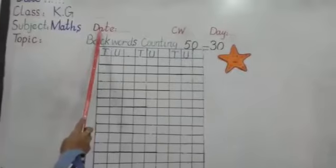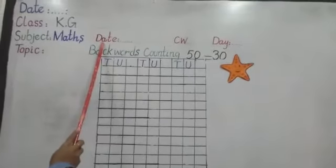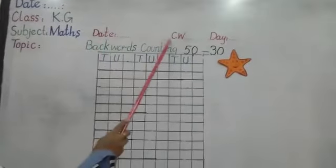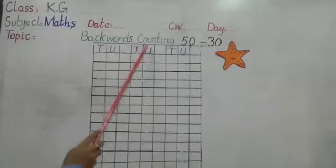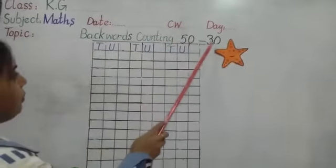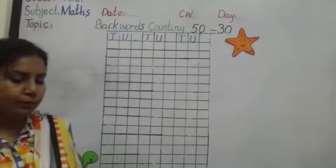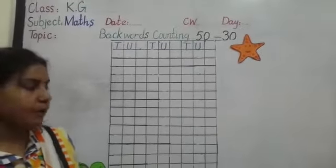First of all, you have to write on your notebook the date, CW and day. Then you write topic, backward counting from 50 to 30. Same like this, you have to prepare your page.